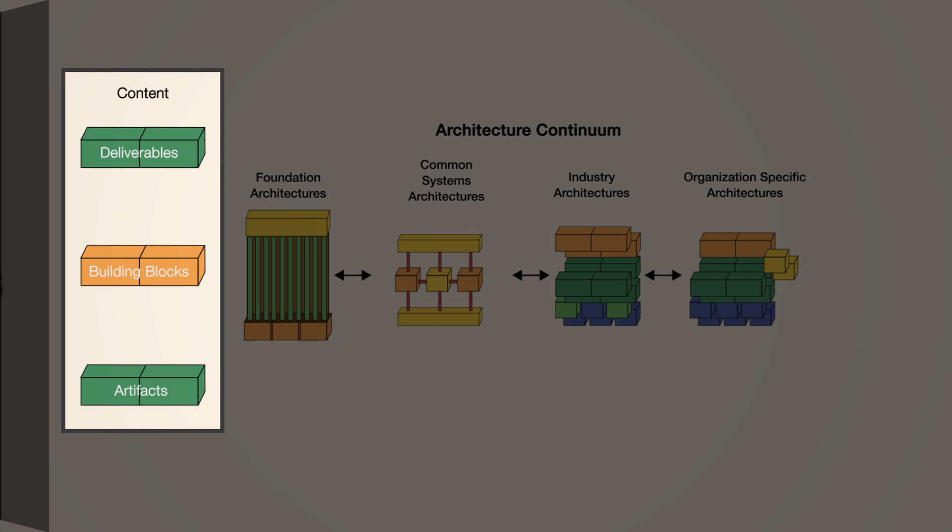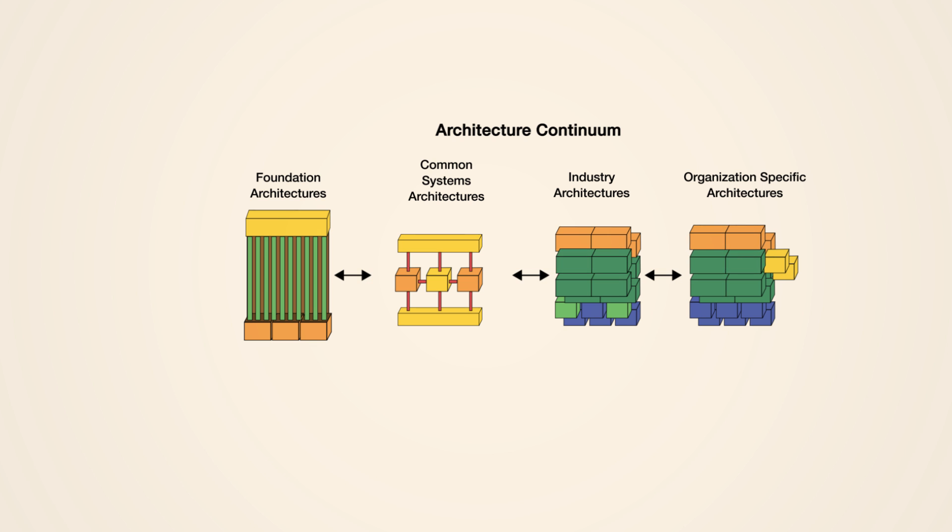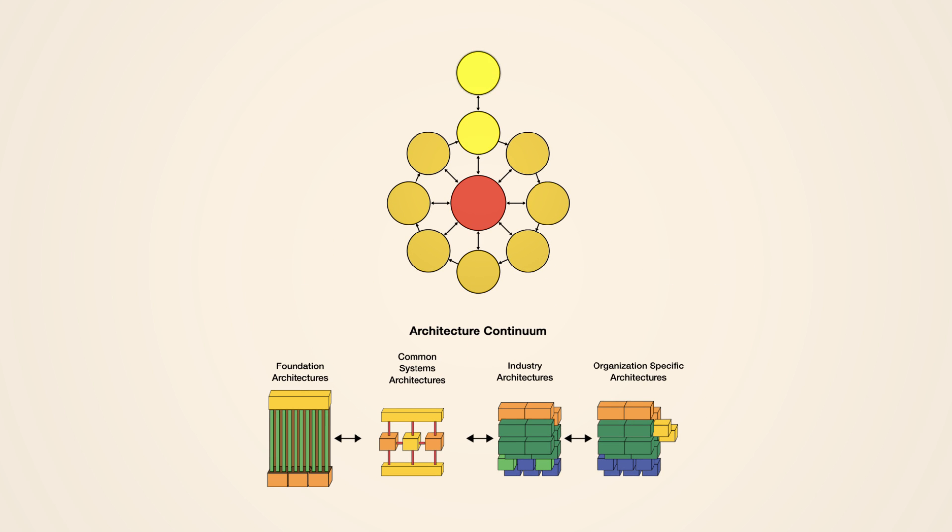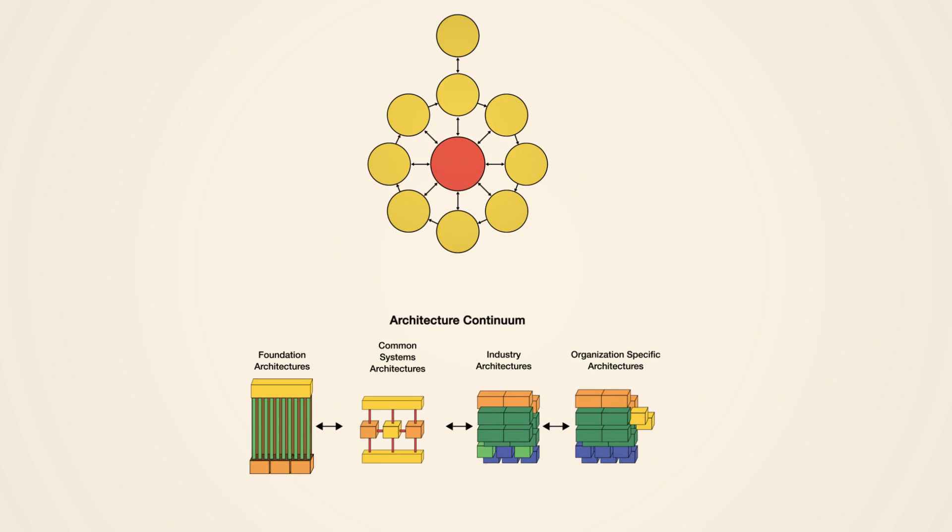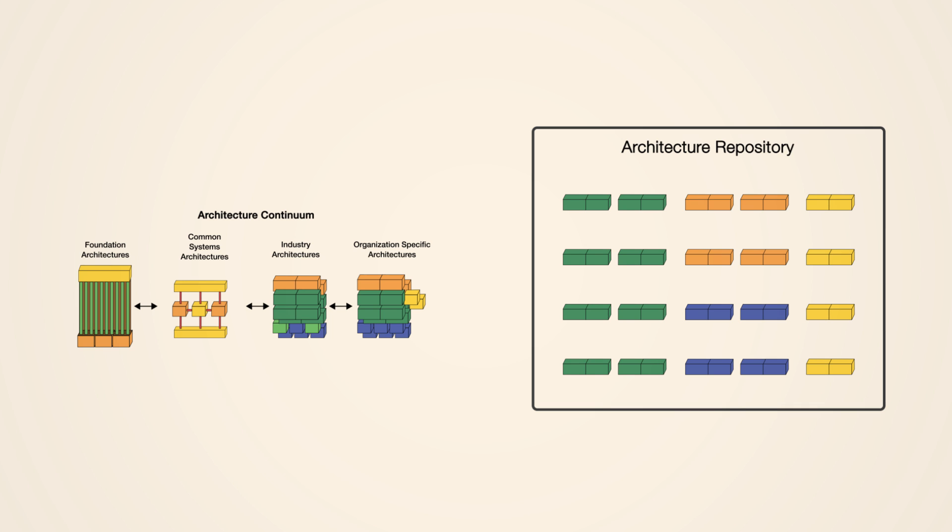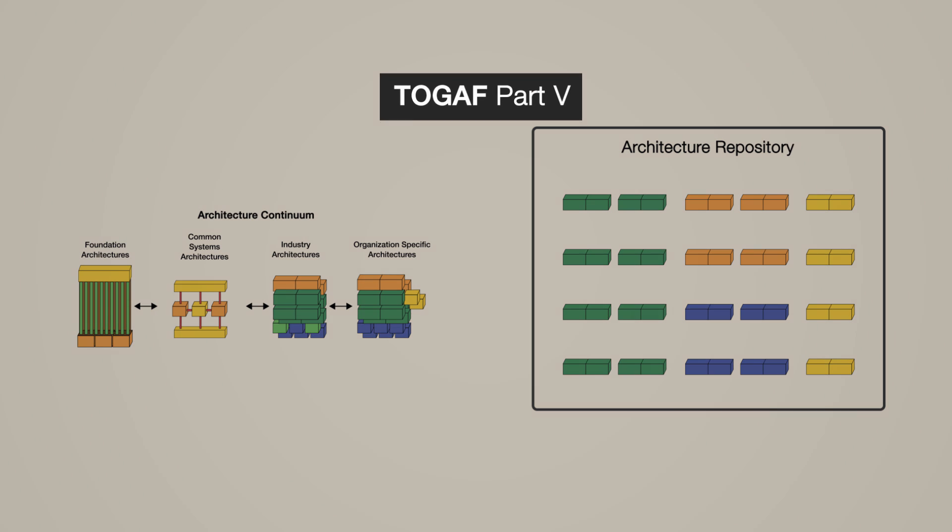Content is classified according to the Enterprise Continuum, which supports the leverage of relevant architecture assets in the ADM. Content is stored in tools such as an architecture repository. The Enterprise Continuum and tools are both described in Part 5 of TOGAF.